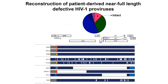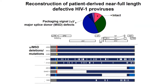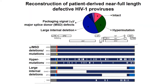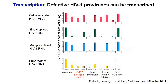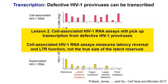Second, we know there are lots of defective proviruses and we want to know what they do. So we reconstructed these defective proviruses containing packaging signal deletions, hypermutations, and large internal deletions in vitro to see whether they can make any viral proteins. When we transfect these defective proviruses into primary CD4 T cells using an array of RNA measurements — cell-associated HIV RNA, total or single multiply-spliced ones, or supernatant HIV RNA — we found that these defective proviruses can readily make RNA both cell-associated and in the supernatant. Therefore, in clinical trials we should be cautious using cell-associated RNA levels as a marker for latency reversal, since some signal will be coming from defective proviruses.